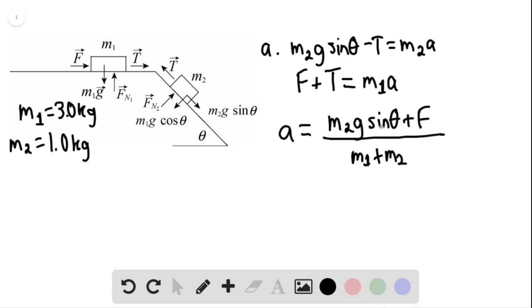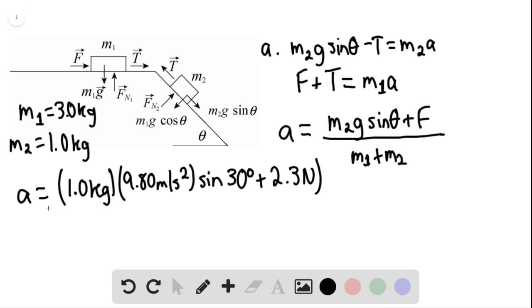And we can solve. So A would be equal to 1.0 kilograms times 9.80 meters per second squared multiplied by sine of 30 degrees, and then plus 2.3 newtons divided by the total mass of 1 plus 3, so 4.0 kilograms.